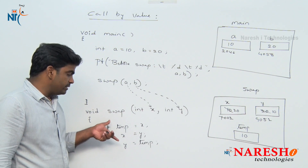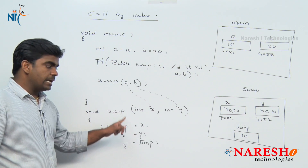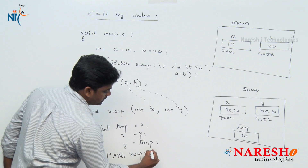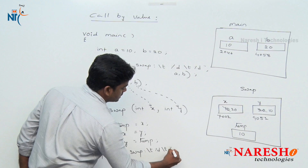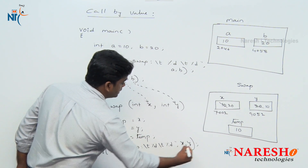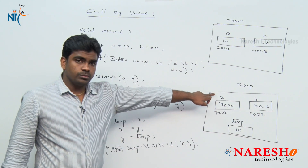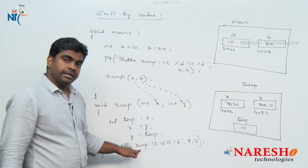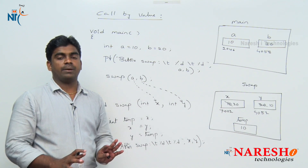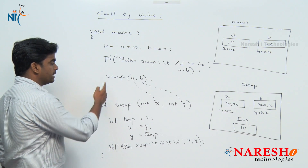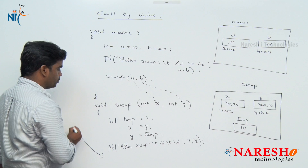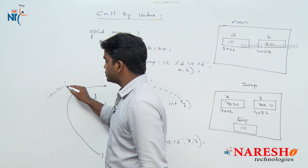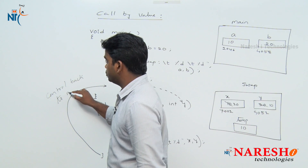Once swapping is completed, if you print after swap inside the swap function, x value is 20 and y value is 10 — swapping is done. But once execution of the swap function is over, control comes back to the main function.